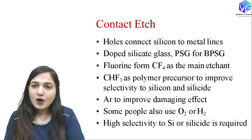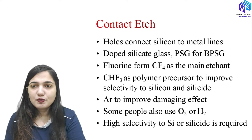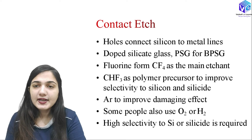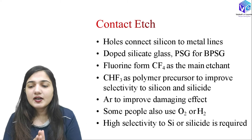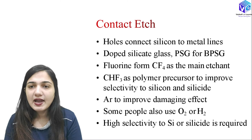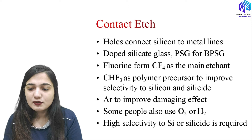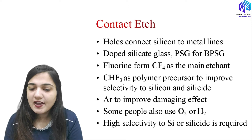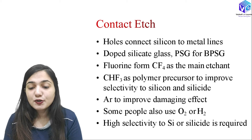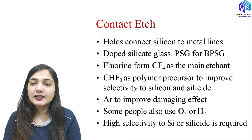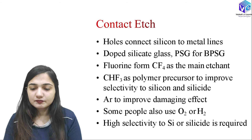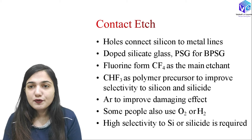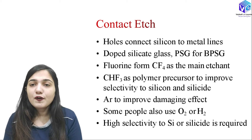Coming to the contact etch: if I have doped silicate glass such as PSG or BPSG, I use the contact etch. In the contact etch, the silicon surface is connected to the metal with the help of holes — it connects the silicon surface to the metal, which is why it is called the contact etch. The etchant used is CF4 as the main etchant, and CHF3 as a polymer precursor to improve selectivity, so that no other material is etched away.